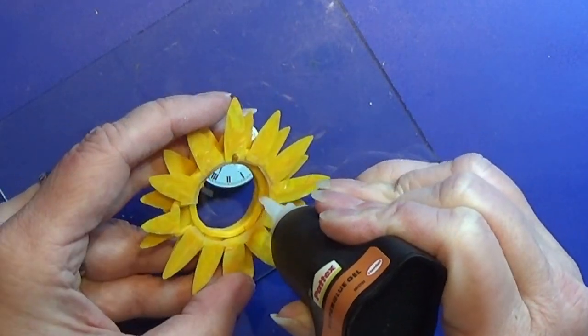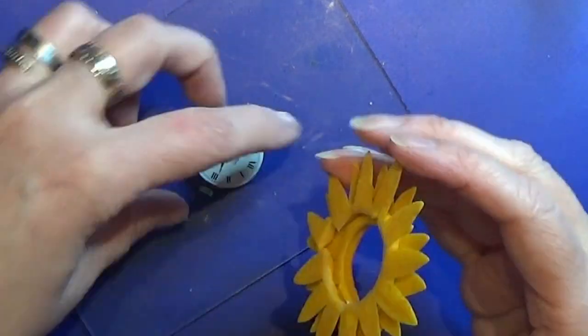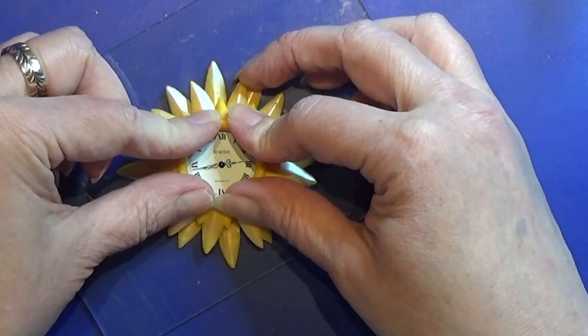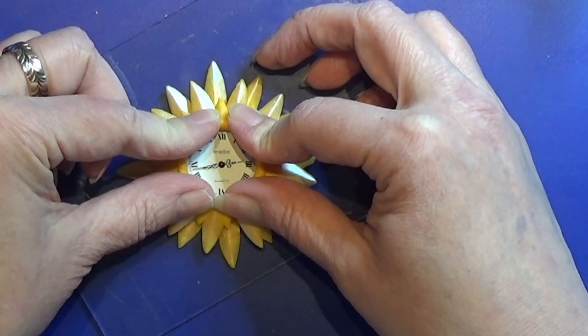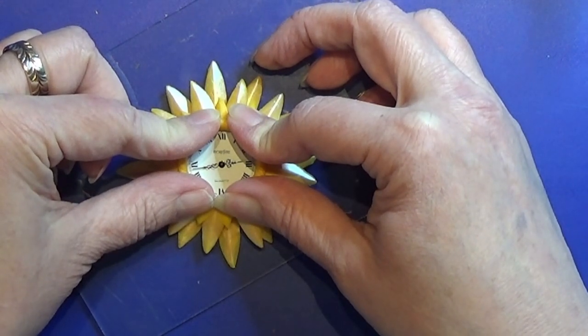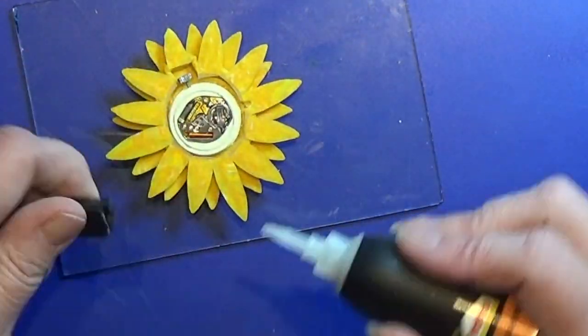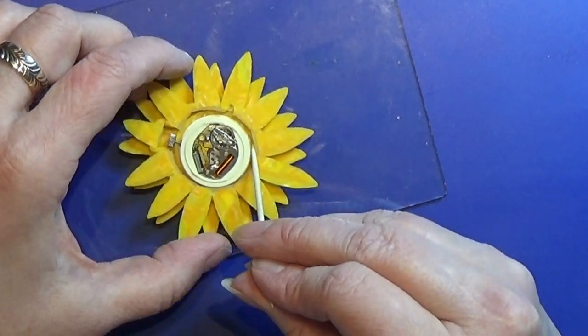Then I used my super glue gel and glued this little wristwatch inside of the sun. Be very careful that you don't glue anything that is not supposed to be glued and let it dry before you handle it after that. I just need the right battery for this little wristwatch and then this is all ready and done.